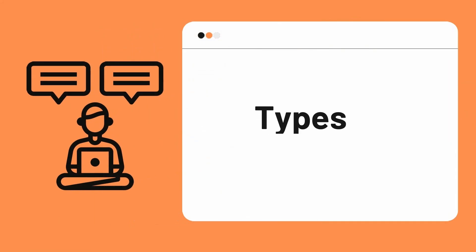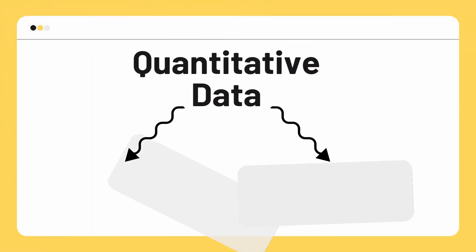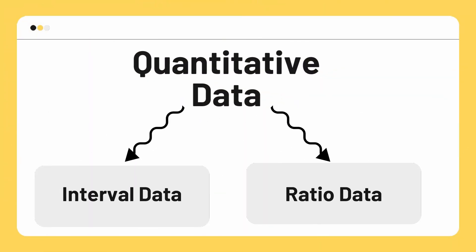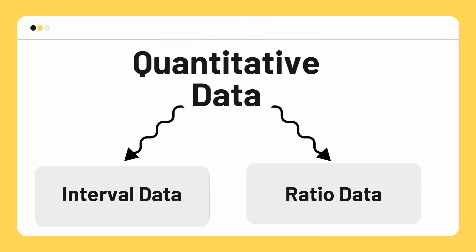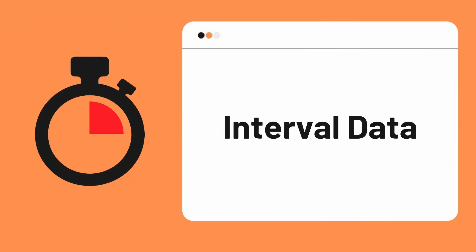Moving on to the next topic, which is the types of quantitative data. Quantitative data is further divided into two types: interval data and ratio data. Let's first discuss interval data.